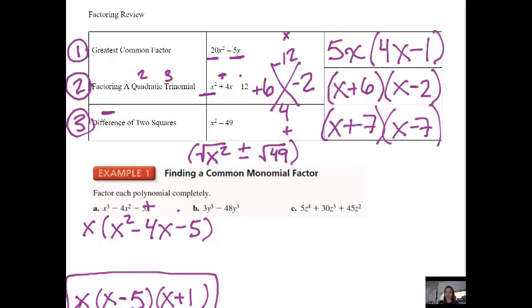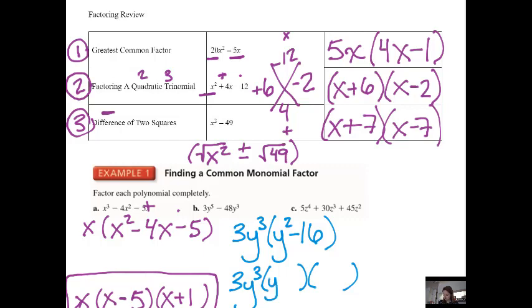1b—start by looking for a GCF. There is, it is 3y to the third, and I'm left with y squared minus 16. Y squared minus 16 is not a quadratic trinomial. First of all, there's not three terms. It's a quadratic binomial. It's a special type. It's a difference of two squares, because I can take the square root of y squared and the square root of 16. So let me factor that. I'm bringing out the GCF, 3y squared, and I get the square root of y squared is y, plus and minus, the square root of 16 is 4. That's y plus 4, y minus 4, and 3y squared.